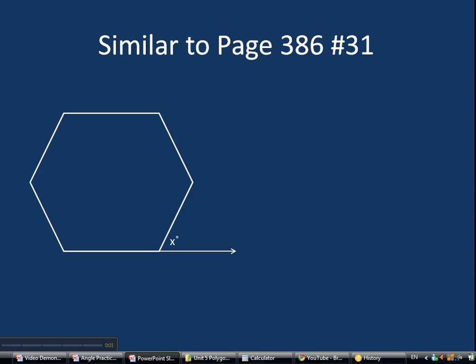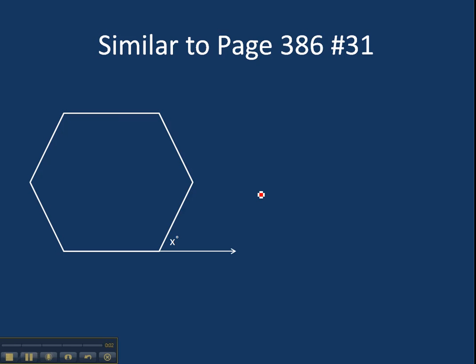This problem is similar to number 31 on page 386. In your book, it's got these all marked as being the same size. I couldn't figure out how to do that with PowerPoint, so I didn't mark them, but it's a regular hexagon, or in your case it's not a hexagon, but the point is that it's regular.